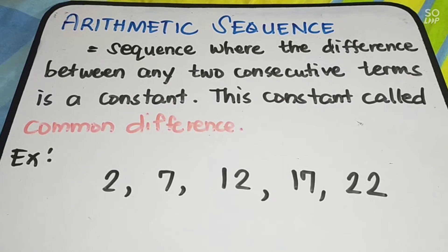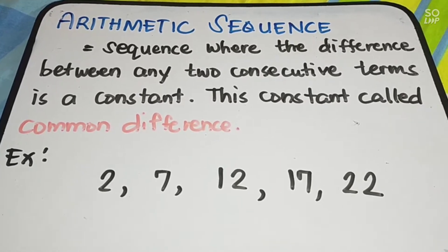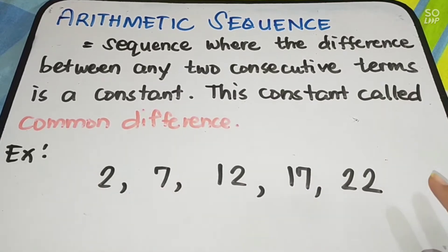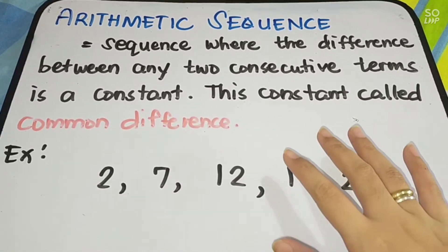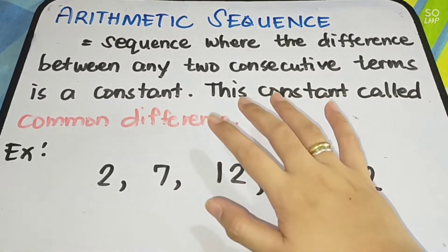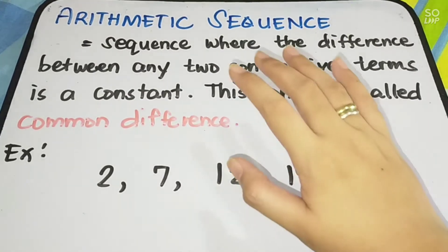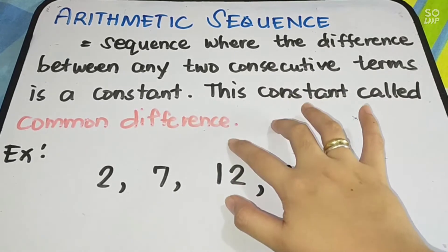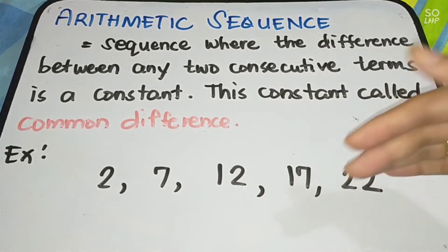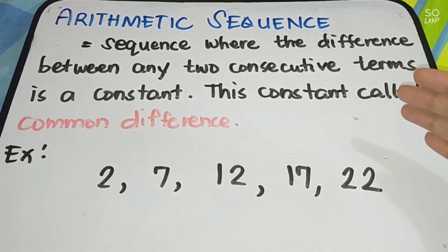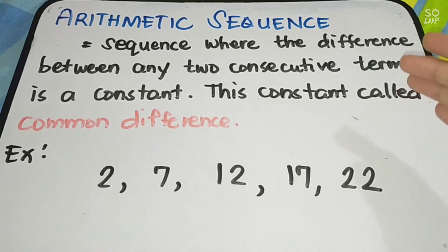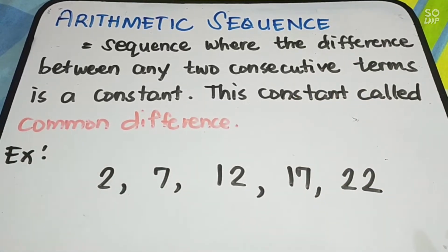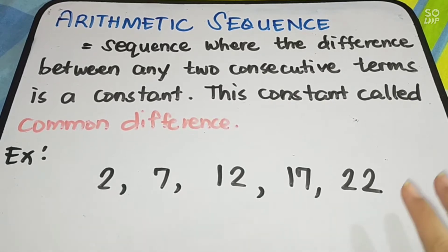Let us define arithmetic sequence. It is a sequence where the difference between any two consecutive terms is a constant. The difference needs to be the same throughout. And this constant is what you call the common difference. So you say it is an arithmetic sequence if it has a common difference — meaning the difference between each term must be the same.